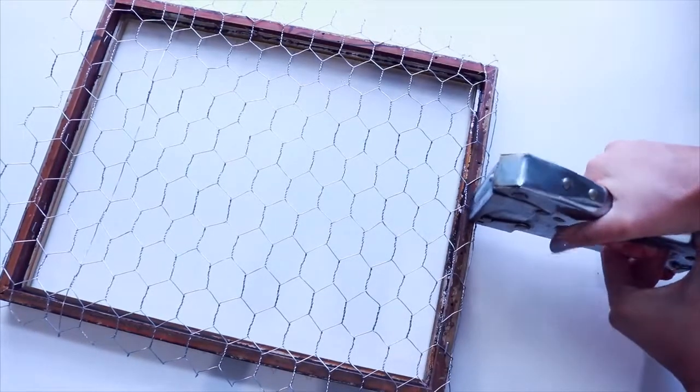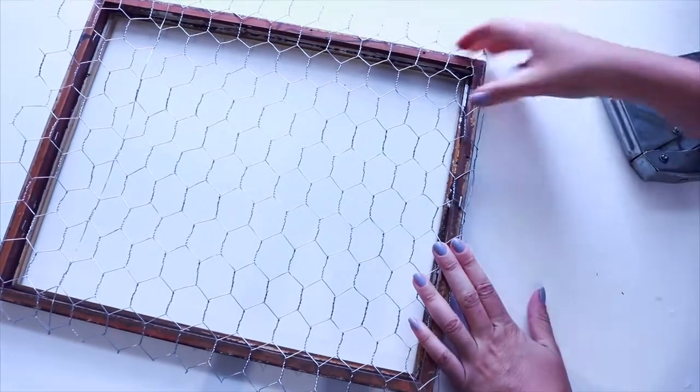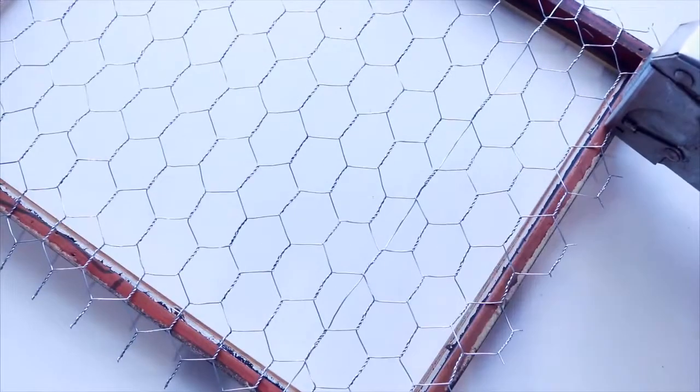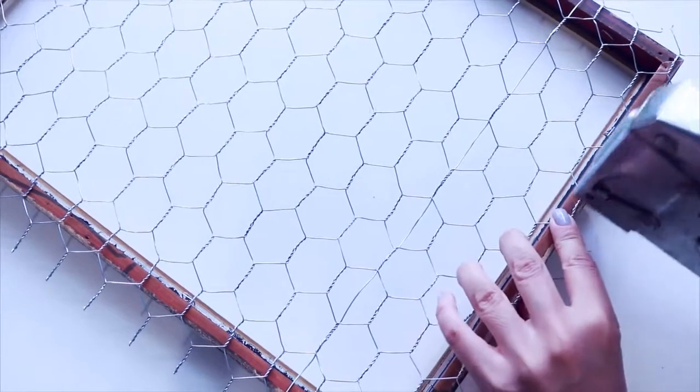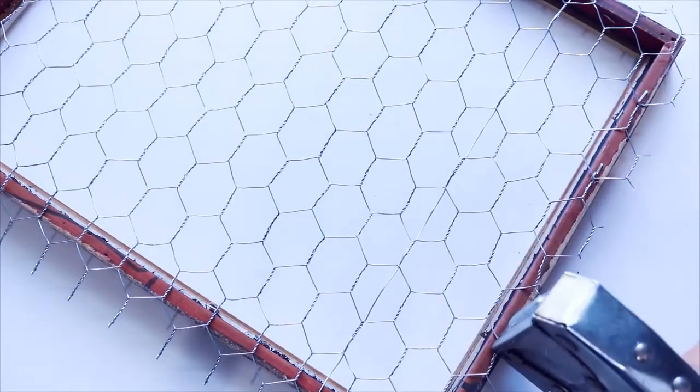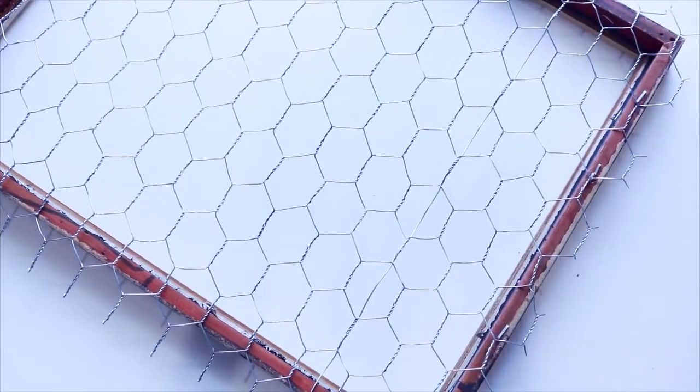Then I went ahead and used an industrial style staple gun, you know one of those really big scary horrible ones, and I stapled the chicken wire onto the frame. I made sure to use a ton of staples to make sure that the chicken wire wasn't going to go anywhere.